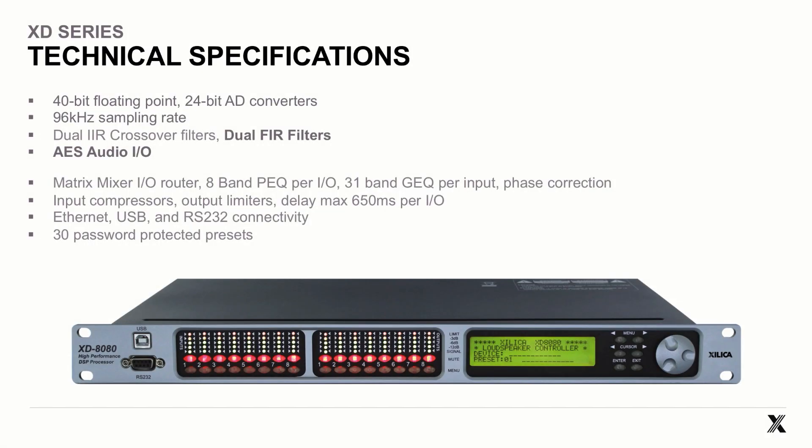Next, let's look at our XD-Series processors. Our XD-Series processors are also 40-bit floating point DSP with 24-bit AD converters. They also sample at 96 kHz and they feature dual IIR crossover filters. The difference between XP-Series and XD-Series is that XD also has dual FIR filters and 8x8 AES-EBU digital audio I/O. We'll also go over the parameters later in this tutorial.